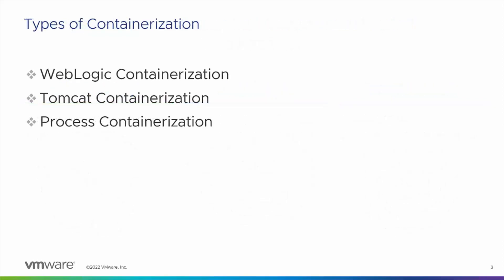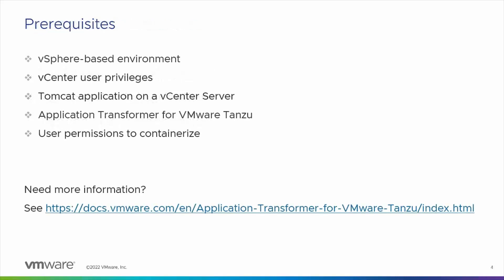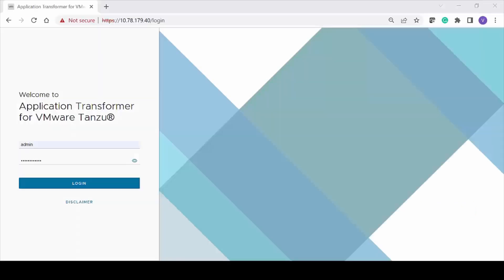Application Transformer for VMware Tanzu supports three different types of containerization: WebLogic, Tomcat, and Process containerization. In this video, we will focus on Tomcat containerization. Here are some prerequisites: a vSphere-based environment with vCenter user privileges, a Tomcat application running on the vCenter server, and Application Transformer for VMware Tanzu setup with the required user permissions. For more information about the prerequisites, permissions, and product download link, see the Application Transformer for VMware Tanzu documentation.